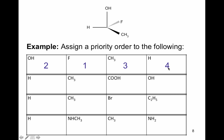Pause the video, fill in the ranking in your lecture notes, then start it back up to check your work. For the second row, the lowest priority is hydrogen and oxygen is first. The tie occurs between two carbons. To break the tie, look at what's directly attached next. One carbon has three hydrogens; the other is COOH, where the double bond counts as three bonds to oxygen — so COOH wins, making it priority two, and the methyl group priority three.